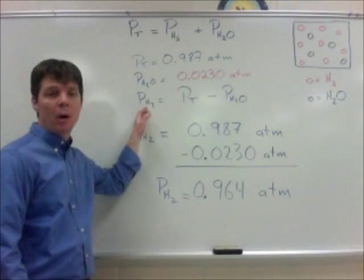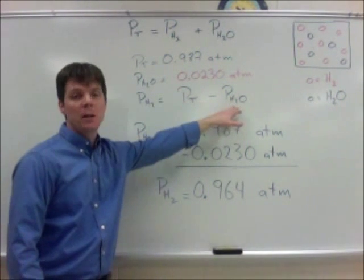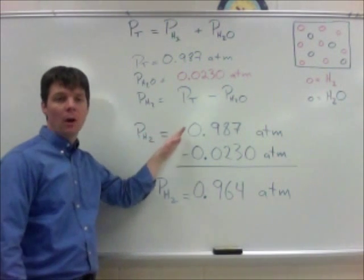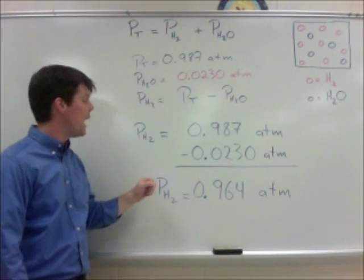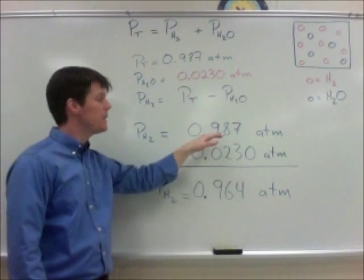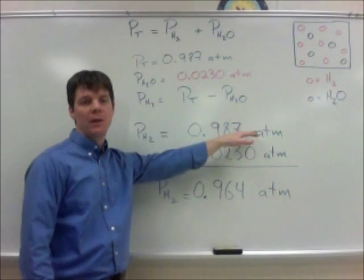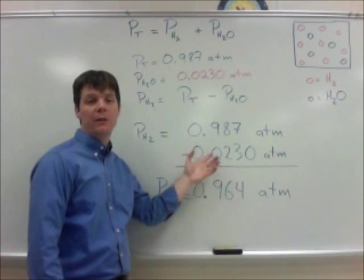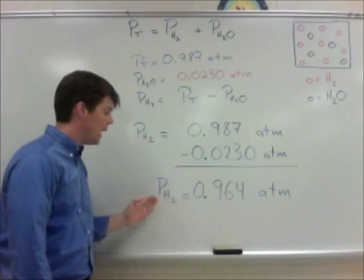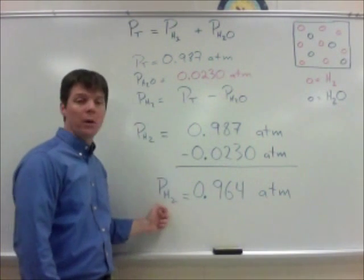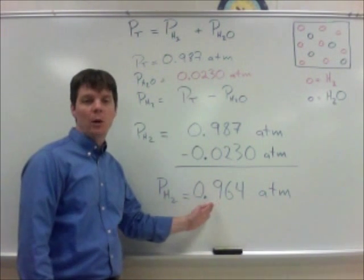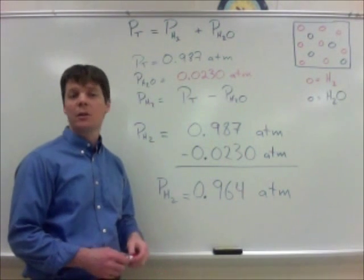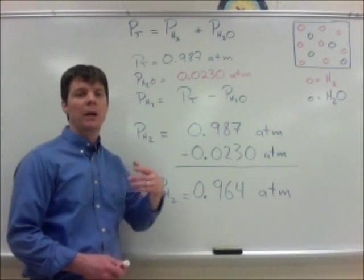Here we've solved to find the partial pressure of hydrogen. It will be found by subtracting the partial pressure of water from the total pressure inside of the container. I've gone ahead and substituted in our known values. We're going to have the total pressure of the container, 0.987 atmospheres, and we're subtracting from that the partial pressure of water, which was 0.0230 atmospheres. This allows me to find a solution for the partial pressure of hydrogen. We calculate a value of 0.964 atmospheres. We do want to report this answer to three significant digits because as we are adding or subtracting,